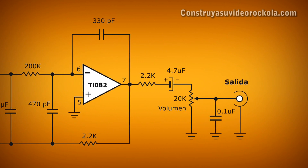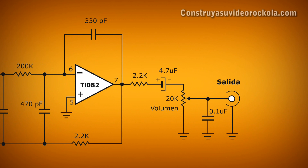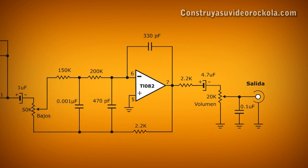At the output of the second operational amplifier, a 0.1 µF capacitor sends to ground any remaining high and medium frequencies.